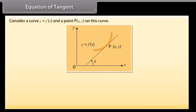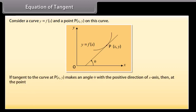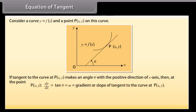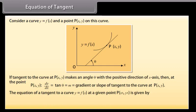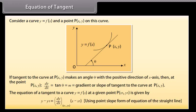Consider a curve Y = F(X) and a point P(X, Y) on this curve. If the tangent to the curve at P(X, Y) makes an angle theta with the positive direction of the X axis, then at the point P(X, Y), DY/DX = tan(theta) = M = gradient, or slope of tangent to the curve at P(X, Y). The equation of a tangent to a curve Y = F(X) at a given point P(X1, Y1) is given by Y − Y1 = (DY/DX at X1, Y1) × (X − X1), using point-slope form of equation of the straight line.